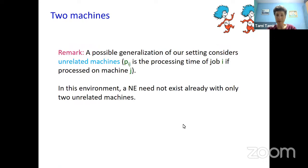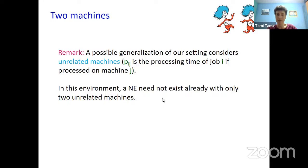Let me mention that for unrelated machines — where PIJ is the processing time of job j on machine i — a Nash equilibrium may not exist even with only two machines. So these good results are specific to related (speed-scaled) machines.